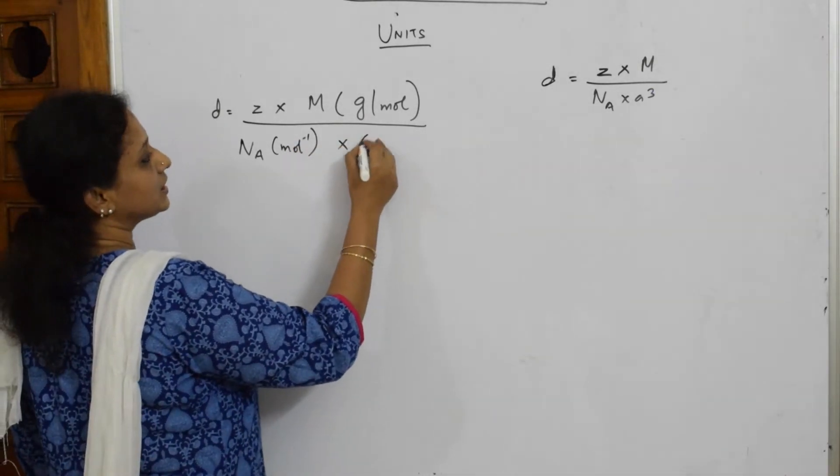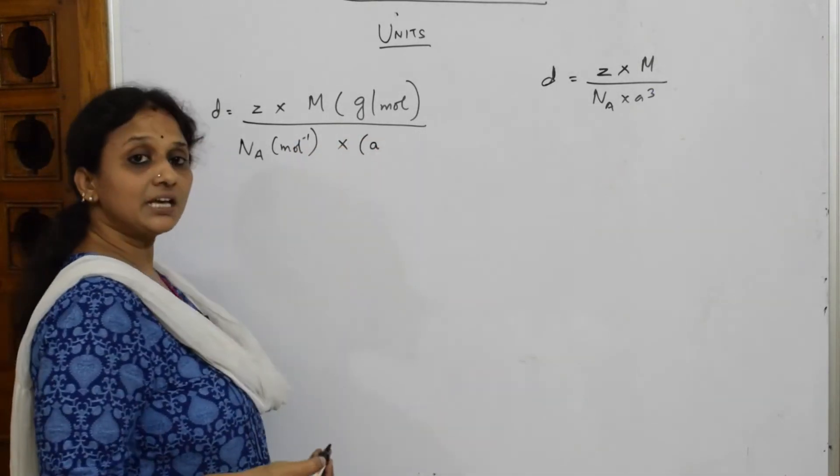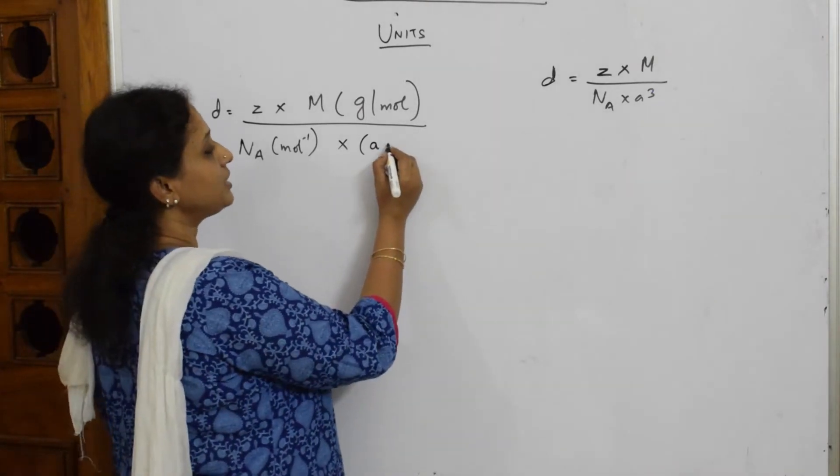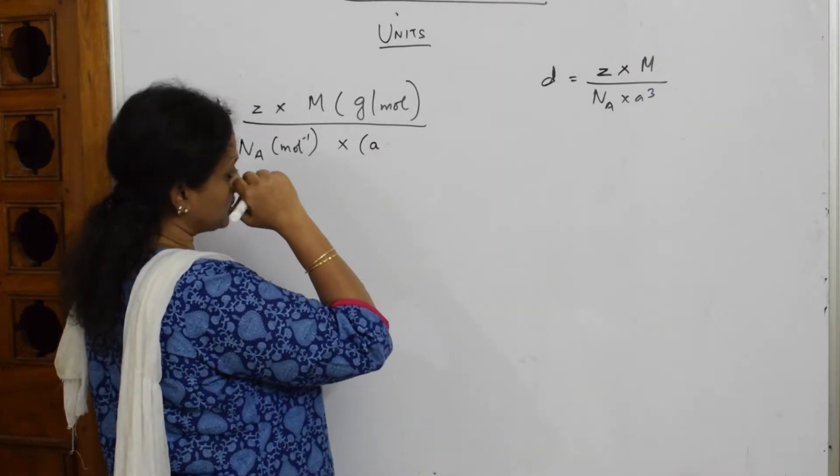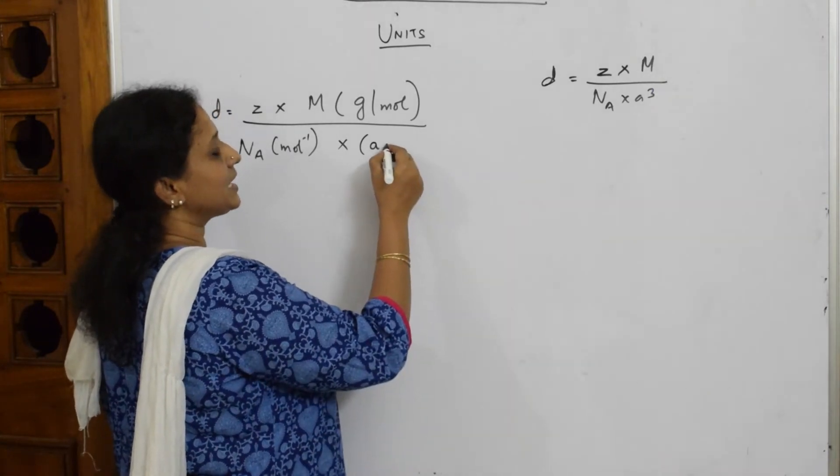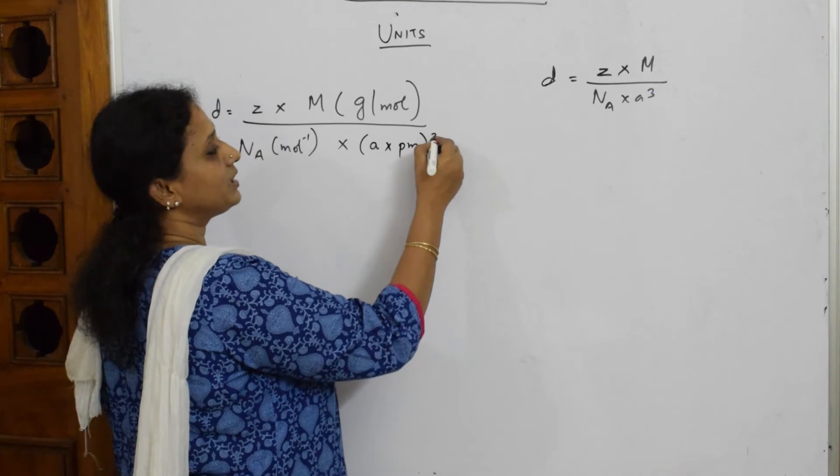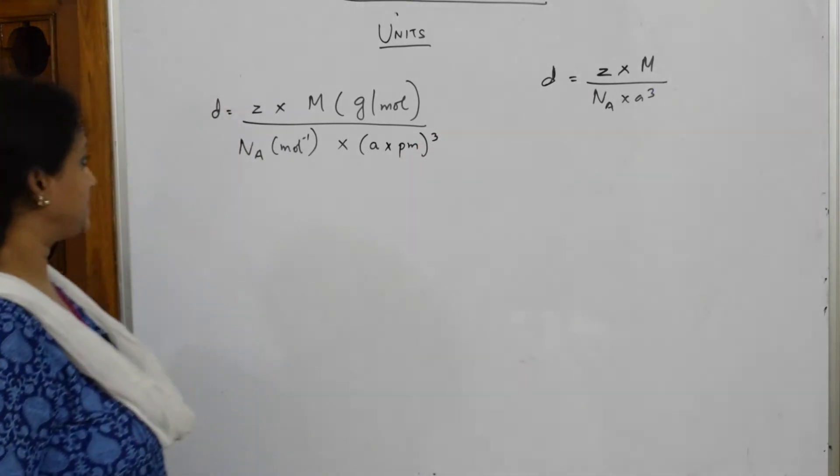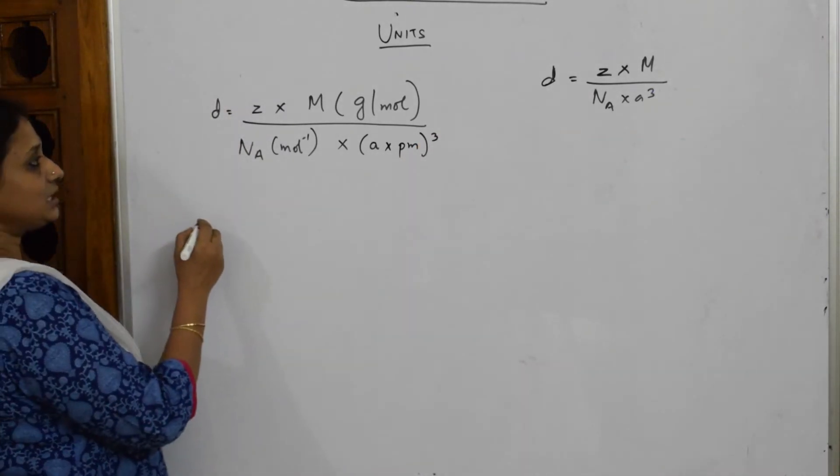A cube is the volume. It can be represented in terms of three things. It can be represented as picometer cube. Now, we very well know if I say A picometer...